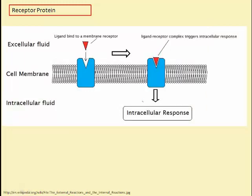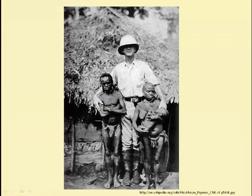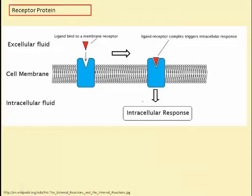Another type of glycoprotein is the receptor protein, which provides binding sites for hormones and other trigger molecules, resulting in a specific cell response. An example of this not working properly is in pygmies, who have faulty growth hormone receptors — even though they produce enough growth hormone, their receptors cannot actually interact with it.